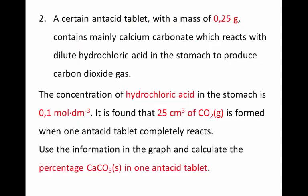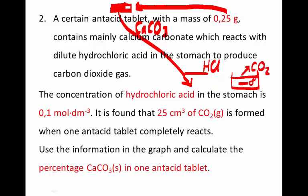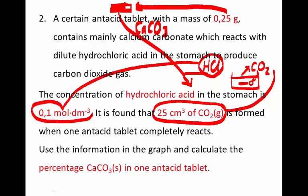A certain antacid tablet — that's a tablet which you put into water and then drink to neutralize the acid in your stomach — has a mass of 0.25 grams. It consists mainly of calcium carbonate, but not totally; some of it consists of other things. We react this tablet with hydrochloric acid, it forms bubbles of carbon dioxide, and we collect 25 centimeters cubed of that carbon dioxide produced.